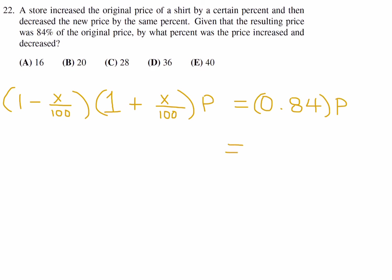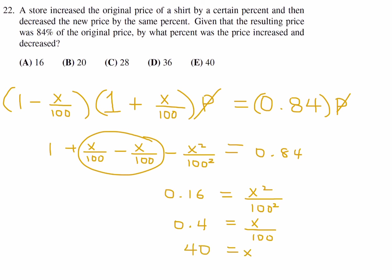And that is equivalent to 84%, so 0.84 of the original price. The p's cancel. If you expand this, 1 plus x over 100 minus x over 100 minus x squared over 100 squared is equal to 0.84. These two cancel, and then if I bring the 0.84 over, it becomes 0.16 is equal to x squared over 100 squared. And then if I take the square root of both sides, this becomes x over 100 and this becomes 0.4. And therefore, cross multiply and you get x equal to 40. 40% is the answer, number 22, that would be E.